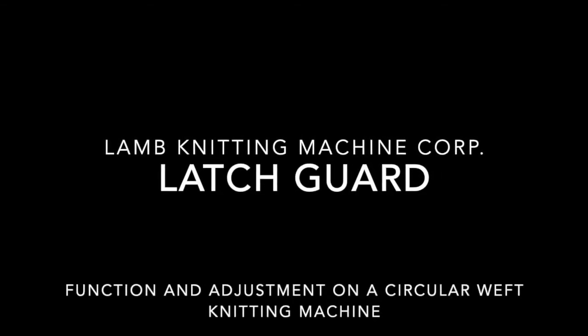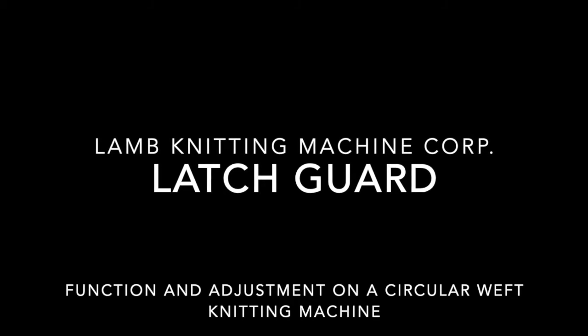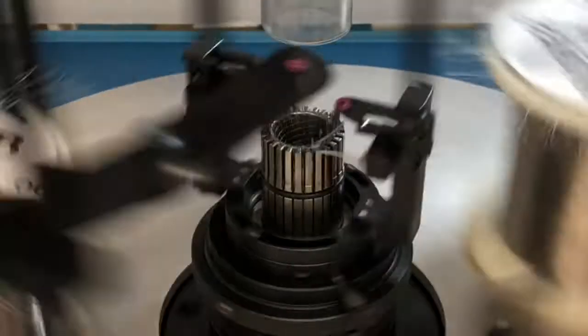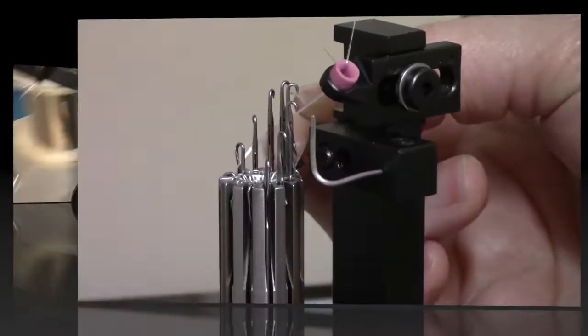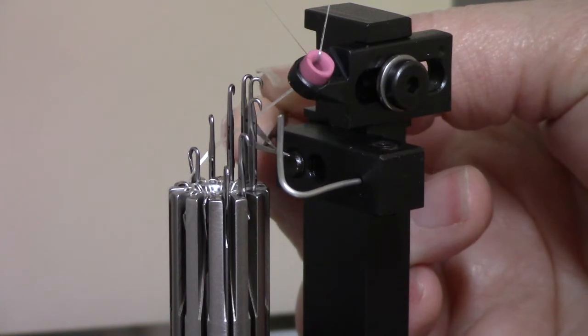This video demonstrates the function and adjustment of a latch guard on a circular weft knitting machine. The function of the latch guard is to prevent the latches from popping shut during knitting.